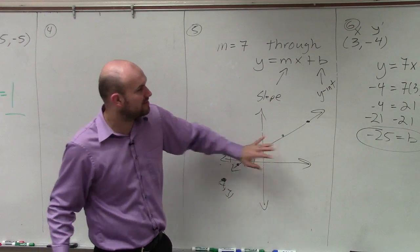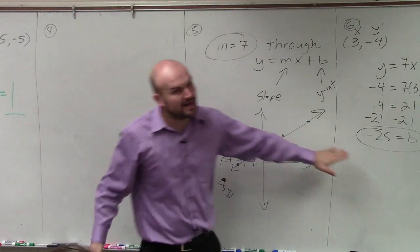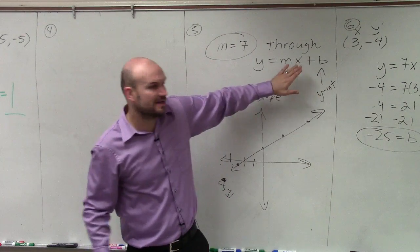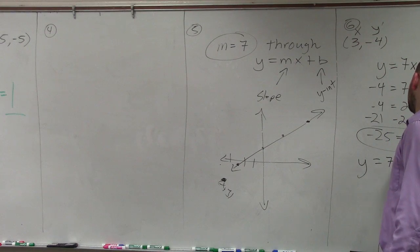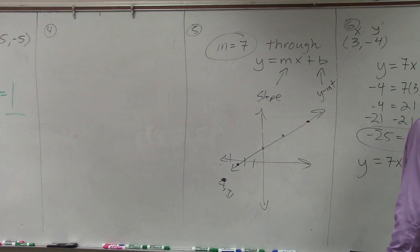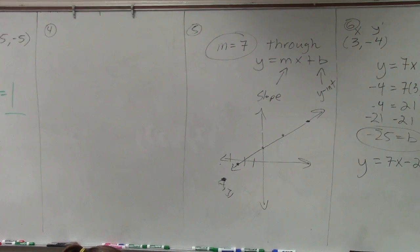So obviously, this is not a representation of that graph. But you can see now I know what m is and I know what b is. So now to write the equation of the line, I can simply just write y equals 7x minus 25. There is obviously another way of looking at that, which would be using your point slope.